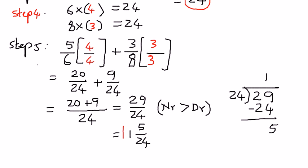So this is our answer — this is the way we want to leave it. When we had two fractions with different denominators, 5 over 6 and 3 over 8, and wanted to add them, we first found the least common multiple for the denominators. The LCM for 6 and 8 was 24. Then we found a common denominator for the two fractions and simplified. This is how we simplify fractions with different denominators. In my next presentation, we shall see more examples of addition of fractions with different denominators.